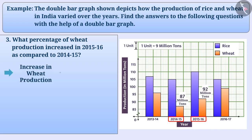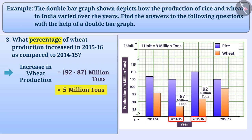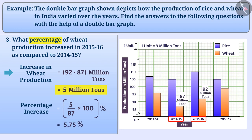The increase in wheat production is 92 minus 87 equals 5 million tons. Since we are calculating growth in comparison to the production of 2014-2015, we will consider the production of 2014-2015 as the base and express the increase in percentage. In this way, the percentage increase is equal to 5 million tons divided by 87 million tons multiplied by 100%, which is equal to 5.75%. Therefore, wheat production increased by 5.75% in 2015-2016 as compared to 2014-2015.